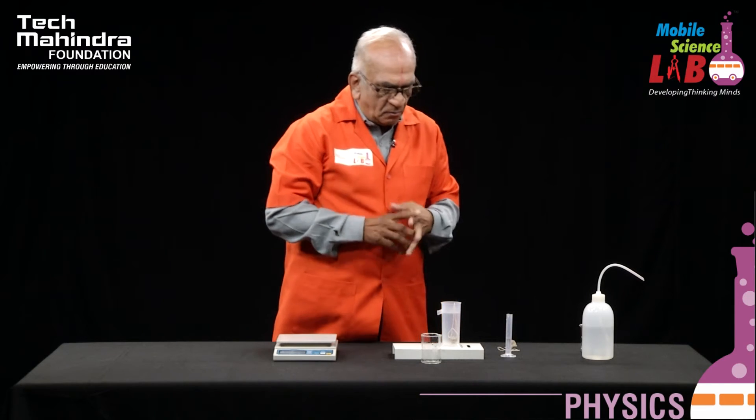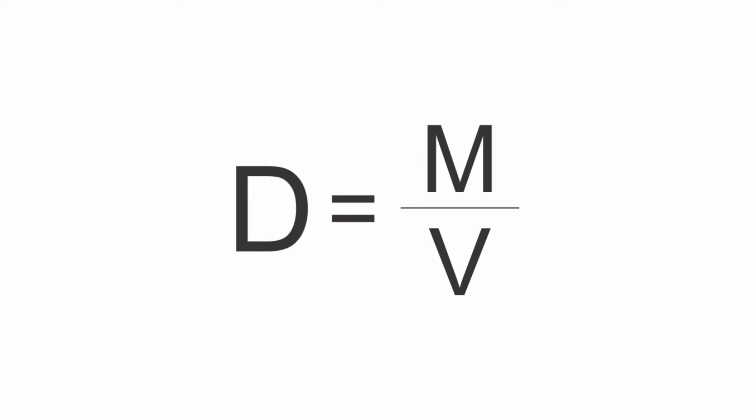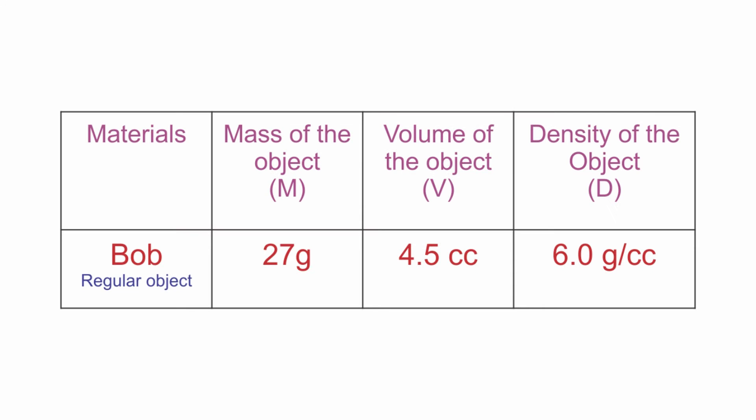We have almost finished the experiment. Shall we calculate the density of the body? When we put it in the equation D equals m by V, where m is the mass of the body and V is the volume, 27 divided by 4.5 gives us a density of 6 grams per cc. This way, we can find out the density of the regular body using the overflow jar.